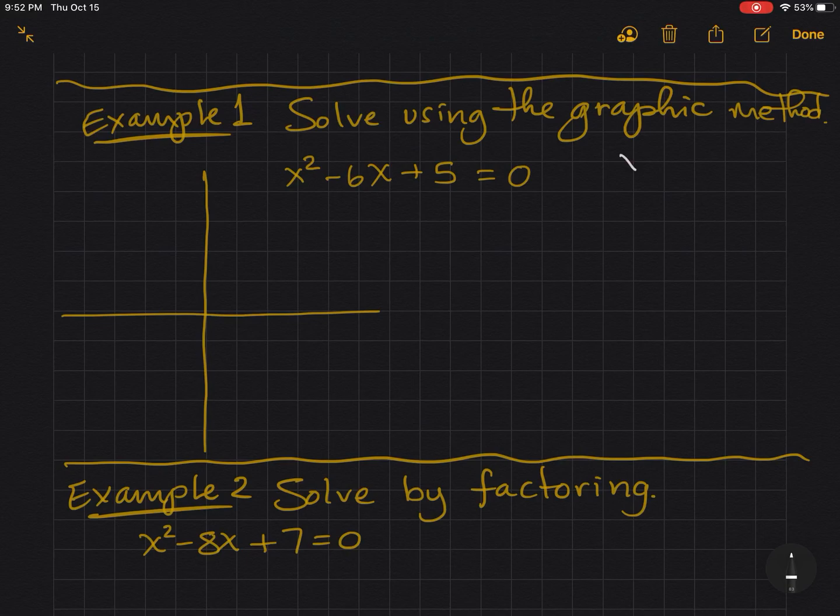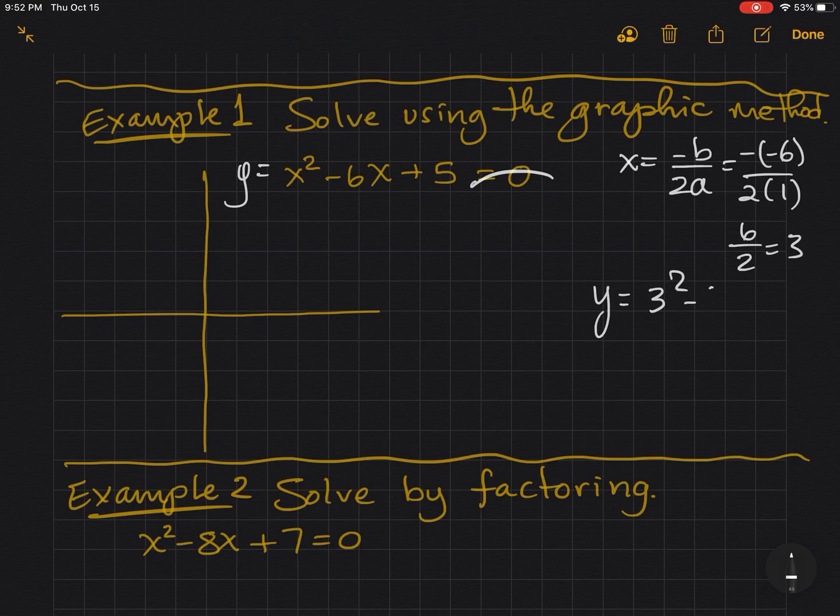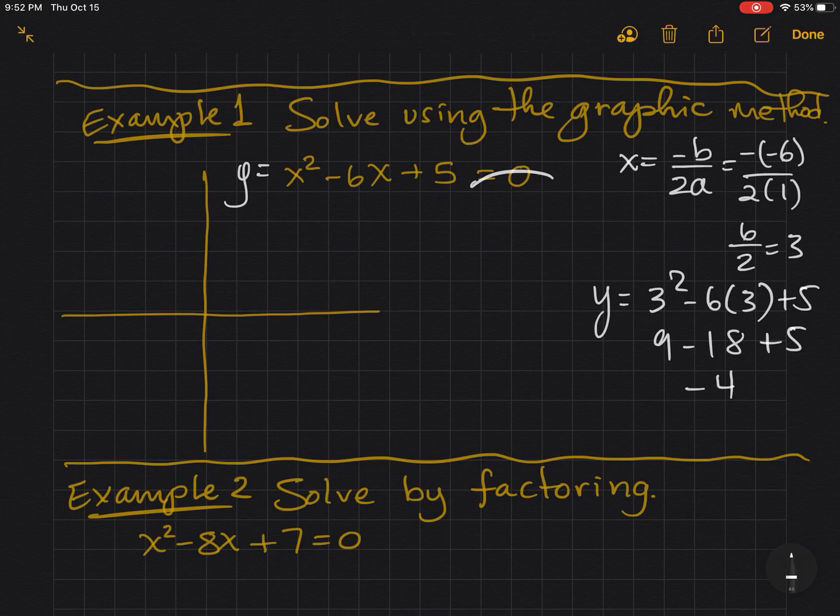So if I were going to graph this, I'd find the vertex. x equals negative b over 2a. So that's negative a negative 6 over 2 times 1. And we get 6 over 2 is 3. And now, you really are thinking of this as being like y equals that. So now we have y equals 3 squared minus 6 times 3 plus 5. 9 minus 18 plus 5 is a negative 4. So our vertex is 3, negative 4.